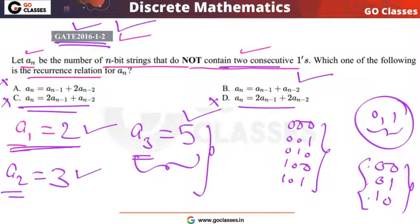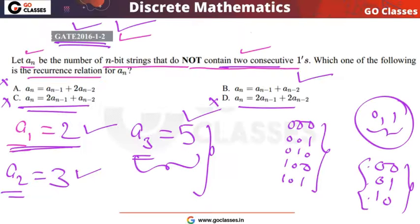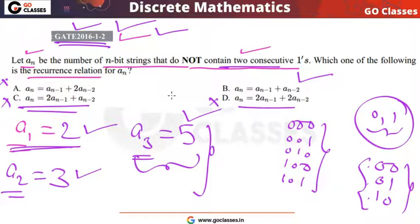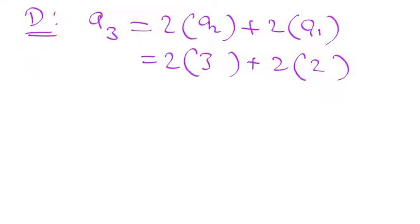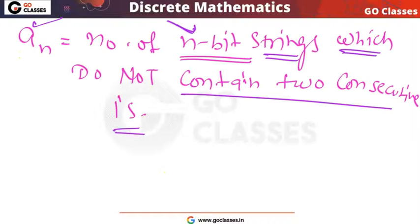But this elimination method is not the right approach when we are learning. Let's see the formal method. This shortcut is fine in the exam to save time, but let's learn the correct concept. What is the correct concept behind this? What is Aₙ?